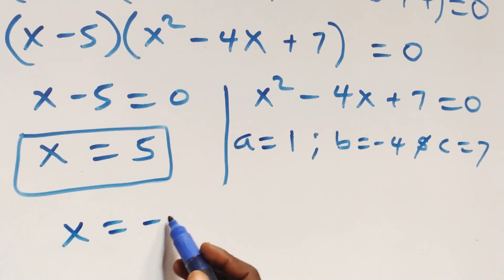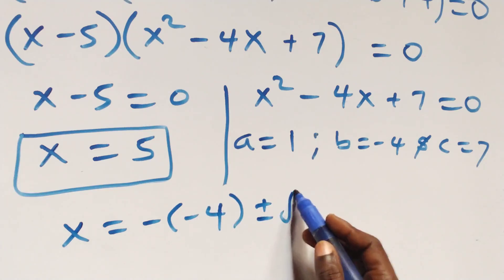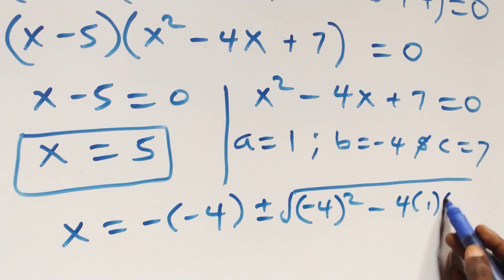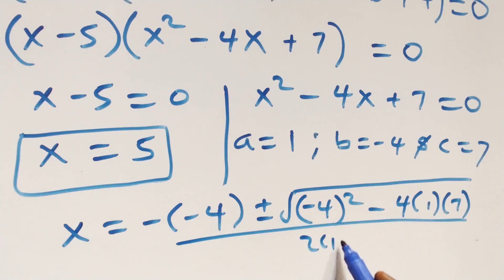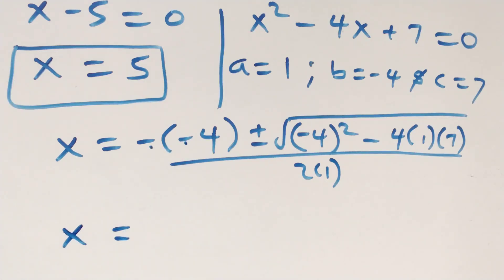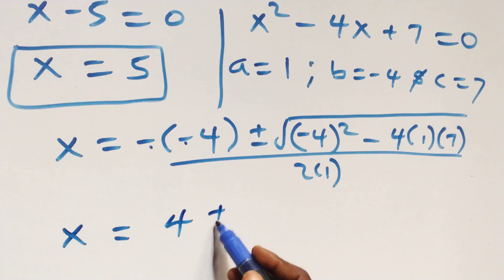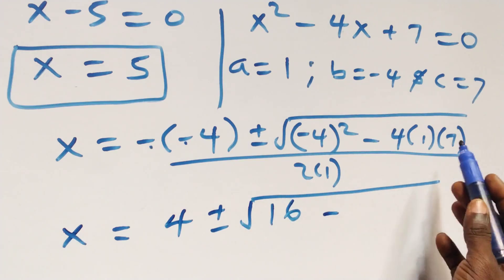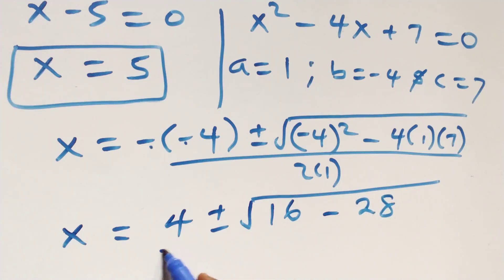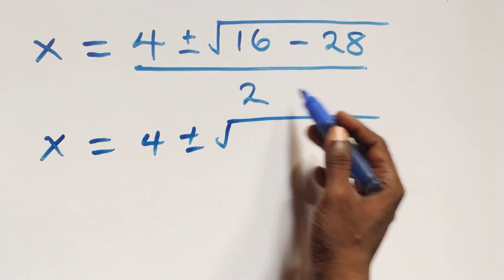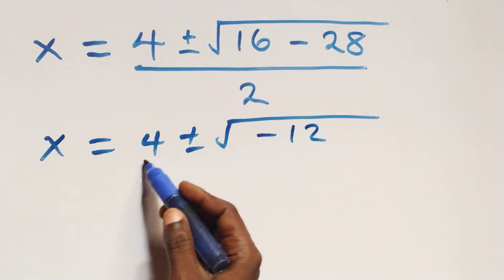Applying the quadratic formula as well, we have x equals to minus of minus 4, plus or minus square root of, minus 4 squared, minus 4 times 1 times 7, all over 2 times 1. That gives us x equals to 4, plus or minus square root of 16 minus 28, that is minus 12, then all over 2.